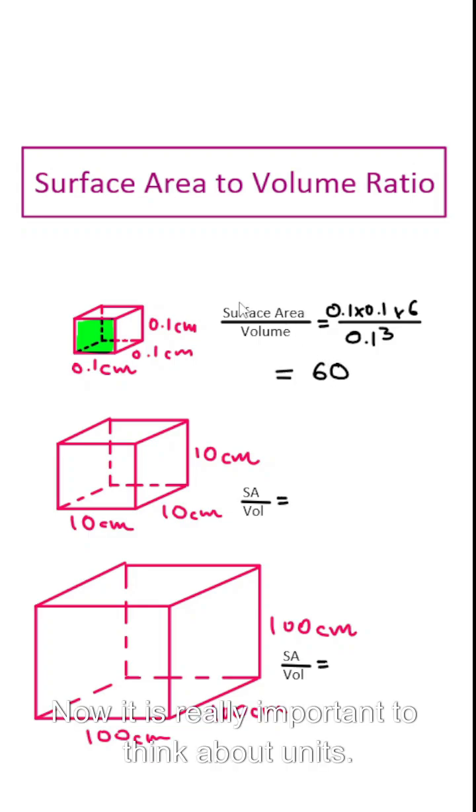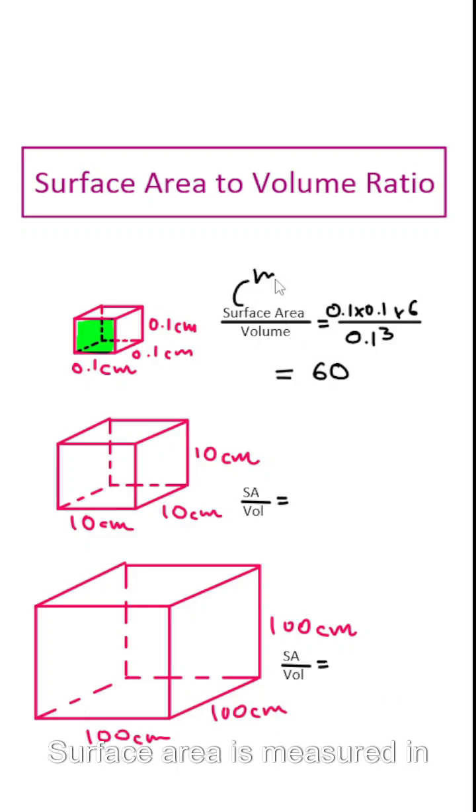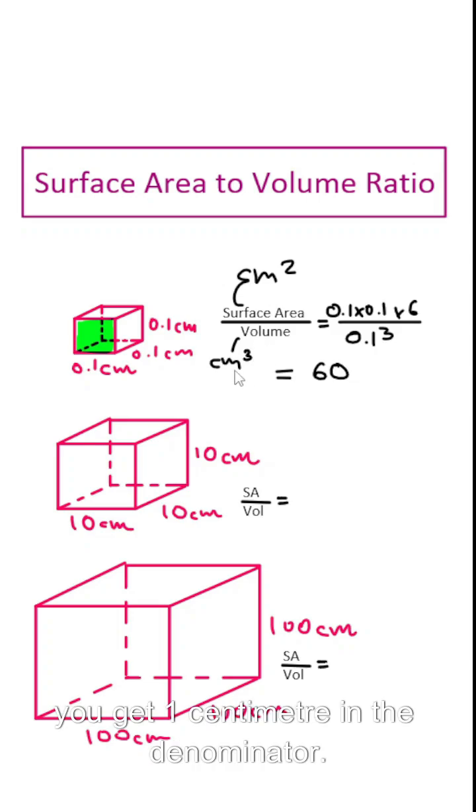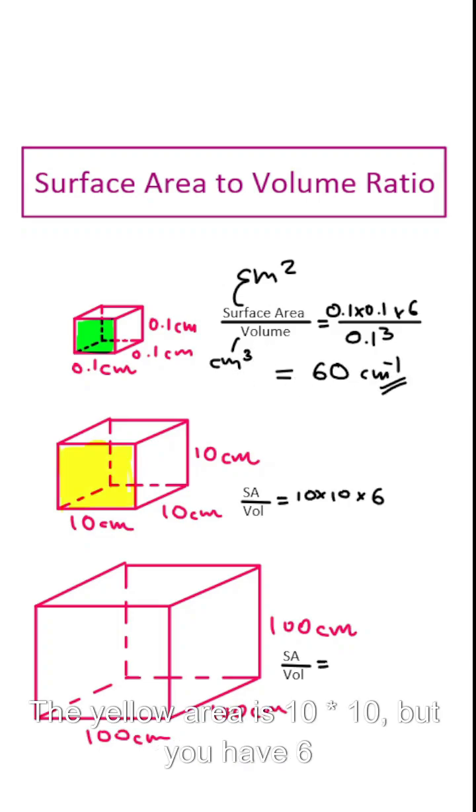Now it's really important to think about units. Surface area is measured in centimeter squared, volume is measured in centimeter cubed, and when you divide those two you get one centimeter in the denominator, so we can say per centimeter.